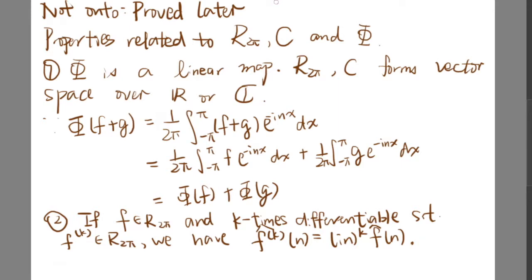To prove that it is a linear map, I will prove that φ(f + g) is indeed equal to φ(f) + φ(g). It is very obvious from the properties of integration. φ(f + g) equals 1/(2π) times the integral from negative pi to pi of (f + g) e^(-inx).